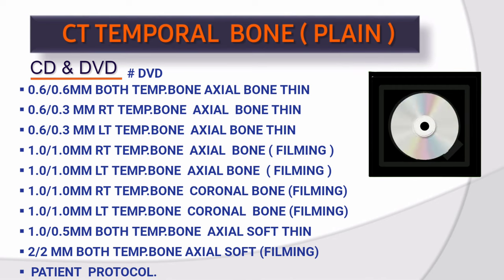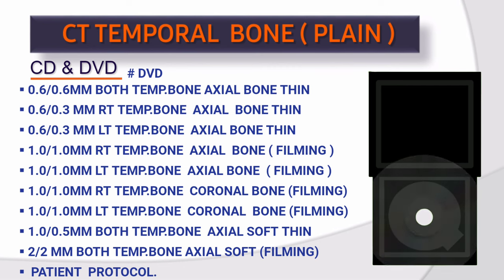Data for DVD: You can give thin data — 0.6×0.6 mm both temporal bone axial bone thin; 0.6×0.3 mm right temporal bone axial bone thin; 0.6×0.3 mm left temporal bone axial bone thin; 1×1 mm right and left temporal bone axial bone for filming; 1×1 mm right and left temporal bone coronal bone for filming; 1×0.5 mm both temporal bone axial soft thin; 2×2 mm both temporal bone axial soft for filming; and patient protocol.